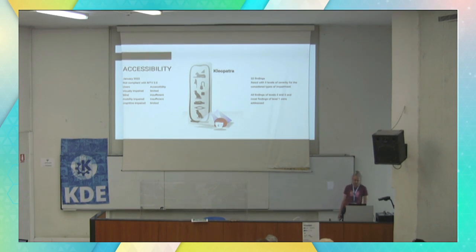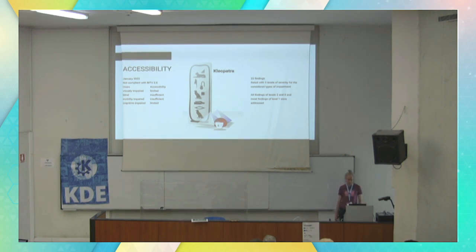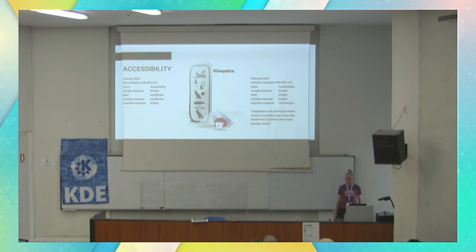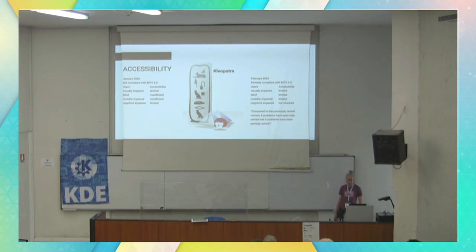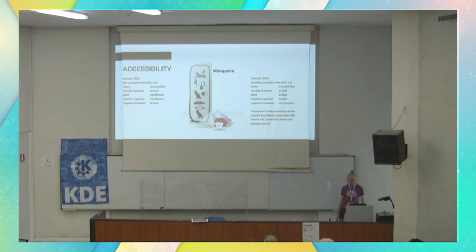For visually impaired but not blind persons it has limited accessibility; for blind people and for mobility impaired people who cannot use the mouse, for example, it was rated as insufficient. There were in total 22 findings, rated for different types of users with three levels of severity. We addressed all findings of levels 2 and 3 and most findings of level 1. The result was that in February this year the test was repeated and now it's at least partially compliant with the standard — usable with limitations for visually impaired, blind, and mobility impaired persons.